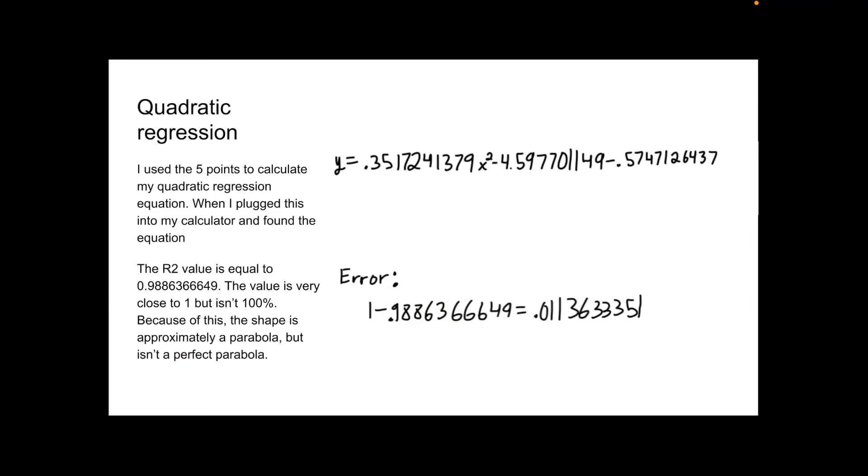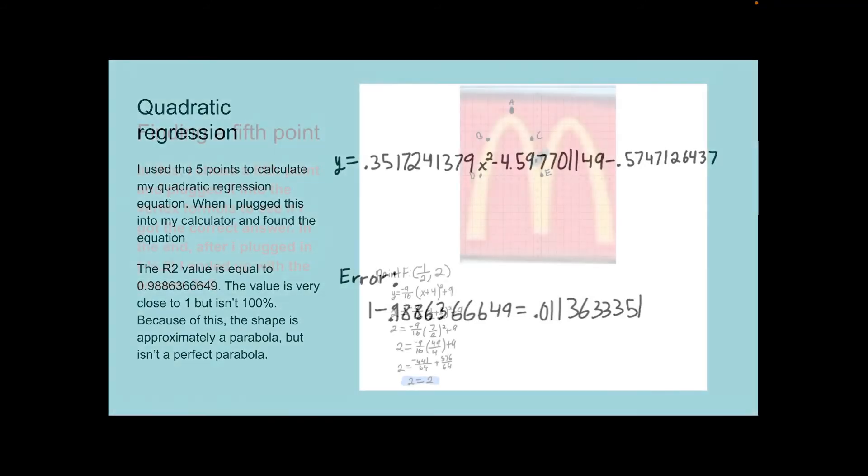All right, for my quadratic regression, I used the five points to calculate my quadratic regression equation. When I plugged this into my calculator, I found the equation. The R² value is equal to 0.886366649. The value is very close to 1 but isn't 100%. Because of this, the shape is approximately a parabola but isn't a perfect parabola.